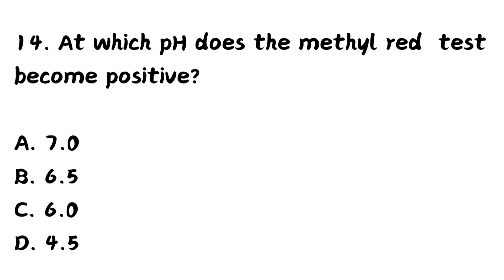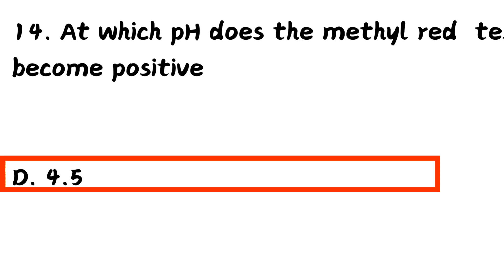Question number 14. At which pH does the methyl red test become positive? Option A, 7. Option B, 6.5. Option C, 6. Option D, 4.5. The right answer is Option D, 4.5. The methyl red test indicates production of acid, so the pH will be 4.5.